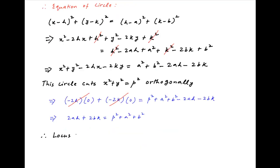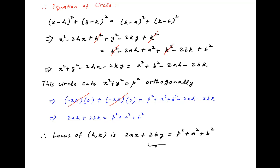(h, k) is the center of the desired circle. Therefore the locus of the center of the circle is found by replacing h with x and k with y, giving us 2ax plus 2by is equal to p squared plus a squared plus b squared.